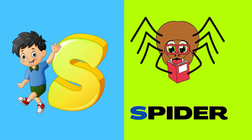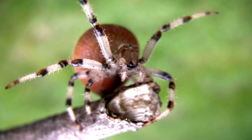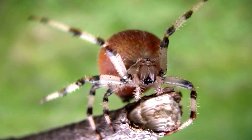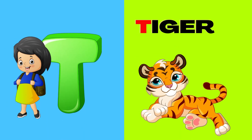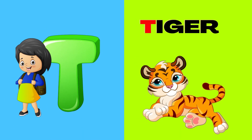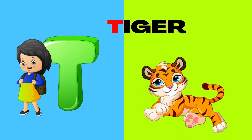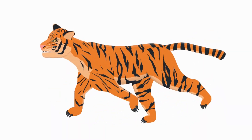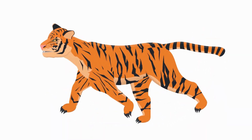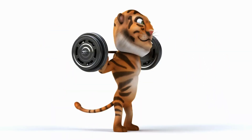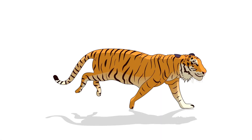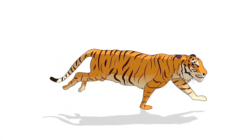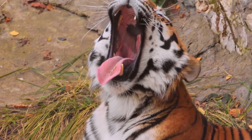S is for Spider. S-S-Spider, S-S-Spider. S-Spider. T is for Tiger. T-T-Tiger, T-T-Tiger, T-T-Tiger.